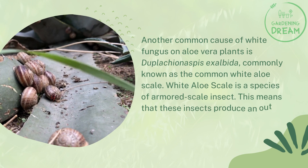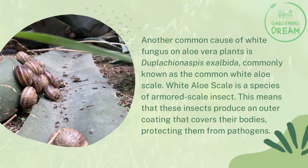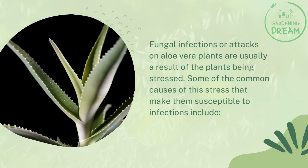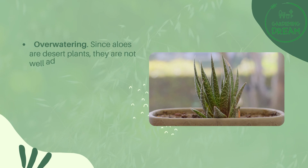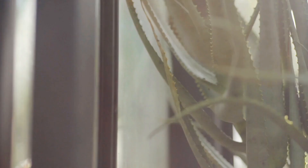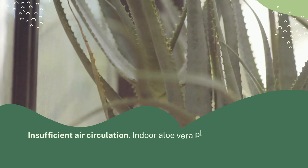These insects produce an outer coating that covers their bodies, protecting them from pathogens. Fungal infections or attacks on aloe vera plants are usually a result of the plants being stressed. Some of the common causes of this stress include over watering. Since aloes are desert plants, they are not well adapted to waterlogged conditions and will not respond well to over watering. To avoid this problem, only water your aloe plants when the top half an inch of the soil has dried.